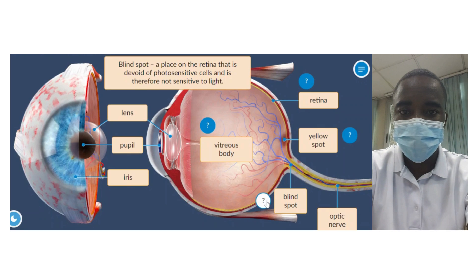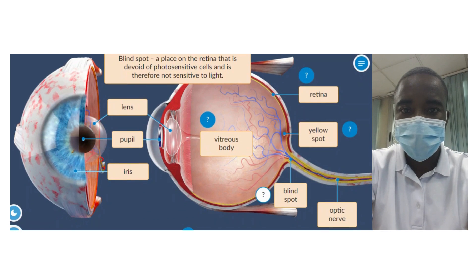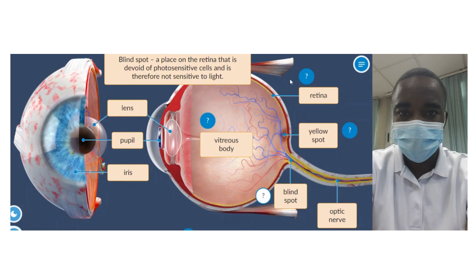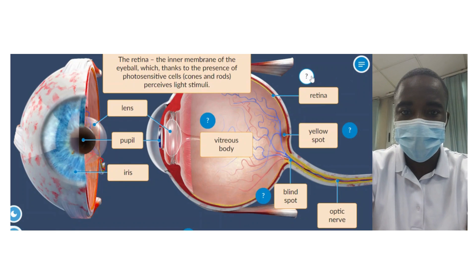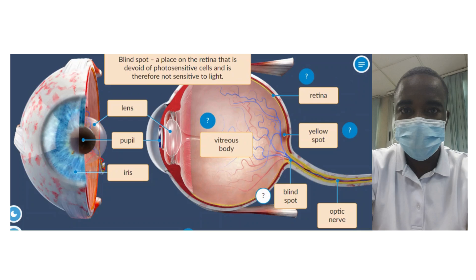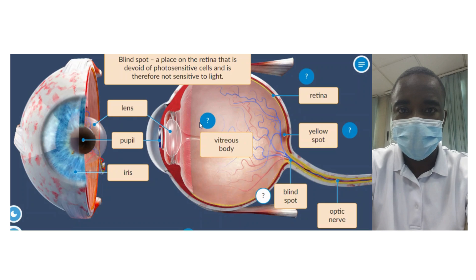The Human Eye Structure Simulation is an interactive educational tool designed to help students explore the intricate anatomy of the human eye and understand the functions of its various components. By providing a hands-on approach to investigating the inner parts of the eye, including the vitreous body, retina, and yellow spot, the simulation offers a comprehensive learning experience covering key concepts in anatomy and physiology. Additionally, the simulation explores normal vision as well as common vision disorders such as nearsightedness and farsightedness, and their corrections.